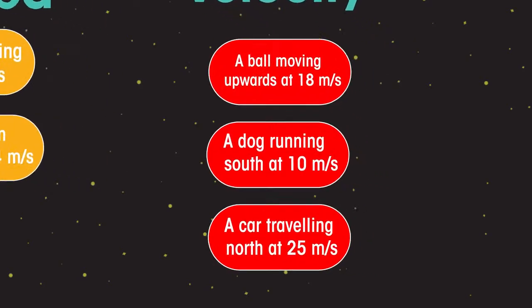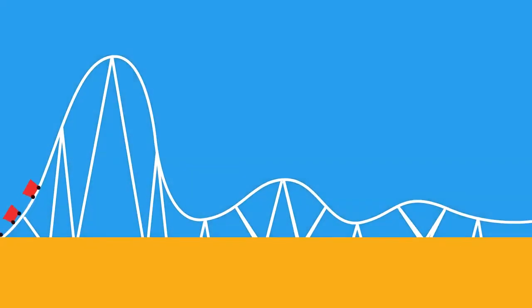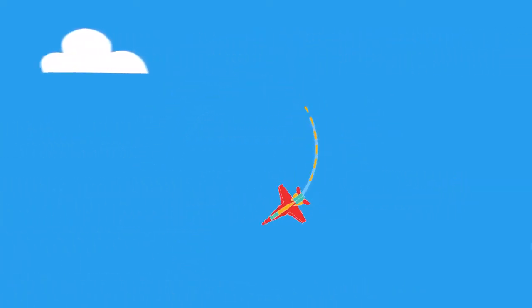Velocity is speed in a given direction. On a fairground ride your speed and velocity will keep changing. What about an airplane doing a loop the loop?